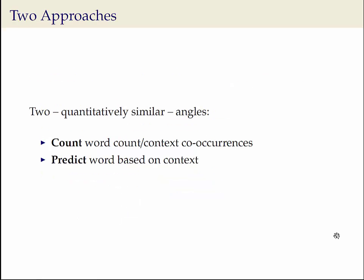The literature makes distinctions between two ways of approaching this problem, both of which are very related to each other. The first approach, which we name count-based, looks at counting word co-occurrences or word-context occurrences. The second angle has the goal of predicting the word based on its context, building the word embedding in the process.